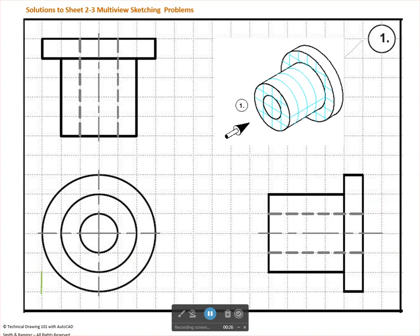Right down here in this corner — your lower left corner where you have that little box. If this were an AutoCAD drawing, we actually have an icon down there called the UCS icon, which stands for User Coordinate System. It has an arrow on it with X in this direction, and an arrow with Y.